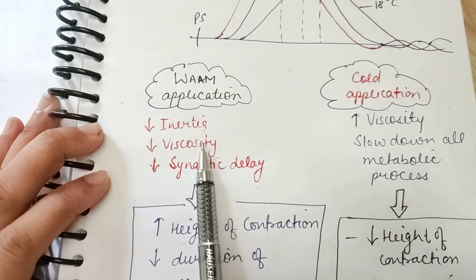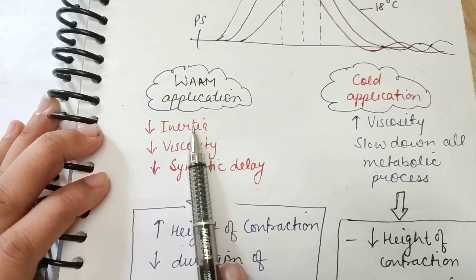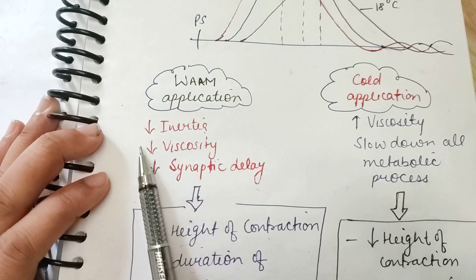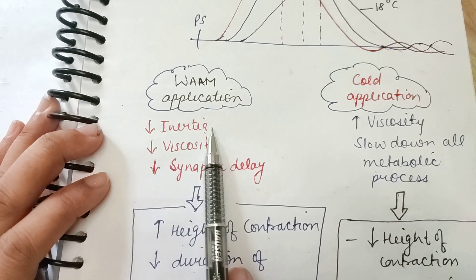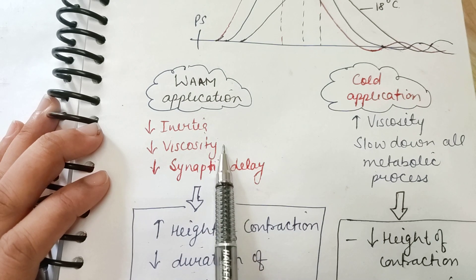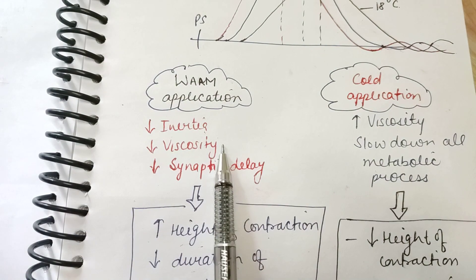The cause behind it is basically since on warm application the viscosity of muscle reduces, and hence the inertia of muscle reduces. Or we can say the muscle resistance reduces, and there is a decrease in synaptic delay because of the temperature rise.